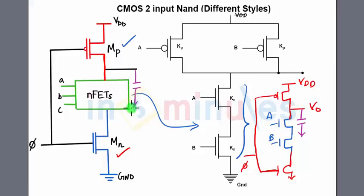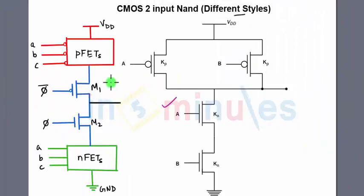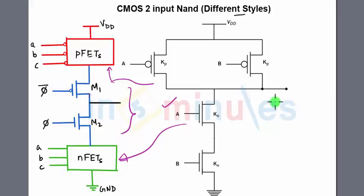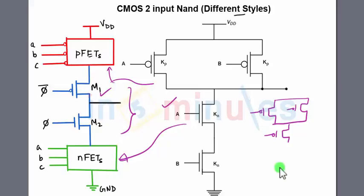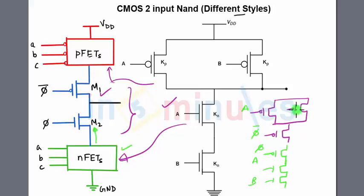Let's do a two-input NAND gate in C²MOS, or clocked CMOS logic. Here, the static circuit is replicated for both PFETs and NFETs with two additional transistors. The pull-up will have two PMOS transistors in parallel, plus an additional PMOS in series. The pull-down has A in series with B as the NFET logic, entirely in series with another NMOS transistor controlled by Phi, while the PMOS side is controlled by Phi-bar. Both PMOS M1 and M2 are connected, with the output taken between them.